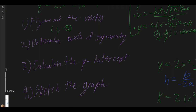The next part is to determine the axis of symmetry. The axis of symmetry is the vertical line that passes through the vertex. There's an invisible line that showcases this as a mirror. In order to determine our axis of symmetry, we use the value of h that we already found — so the axis of symmetry is x equals 1.